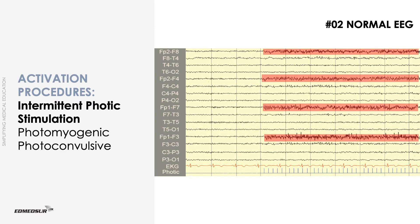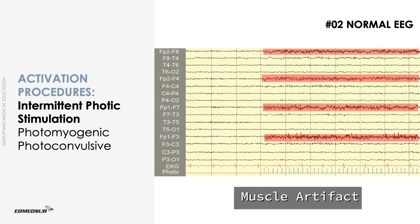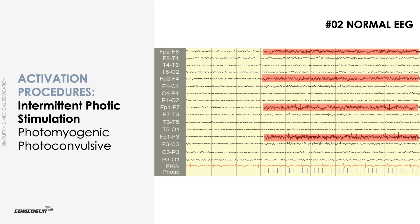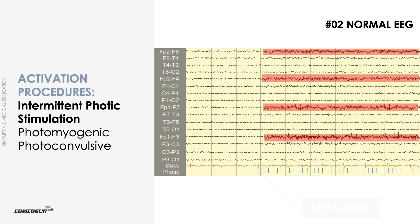Photomyogenic response is a muscle artifact that is usually maximal in the FP1 and FP2 electrodes. At times, the patient may have visible fluttering of eyelids. It is time-locked to the stimulus. It is a non-specific finding and has little clinical significance.